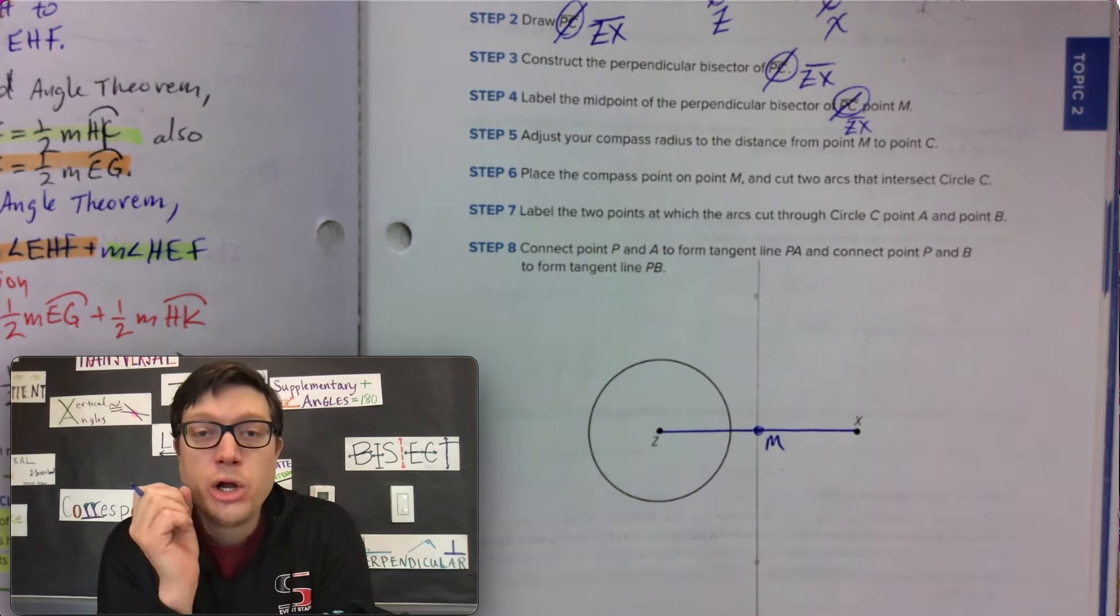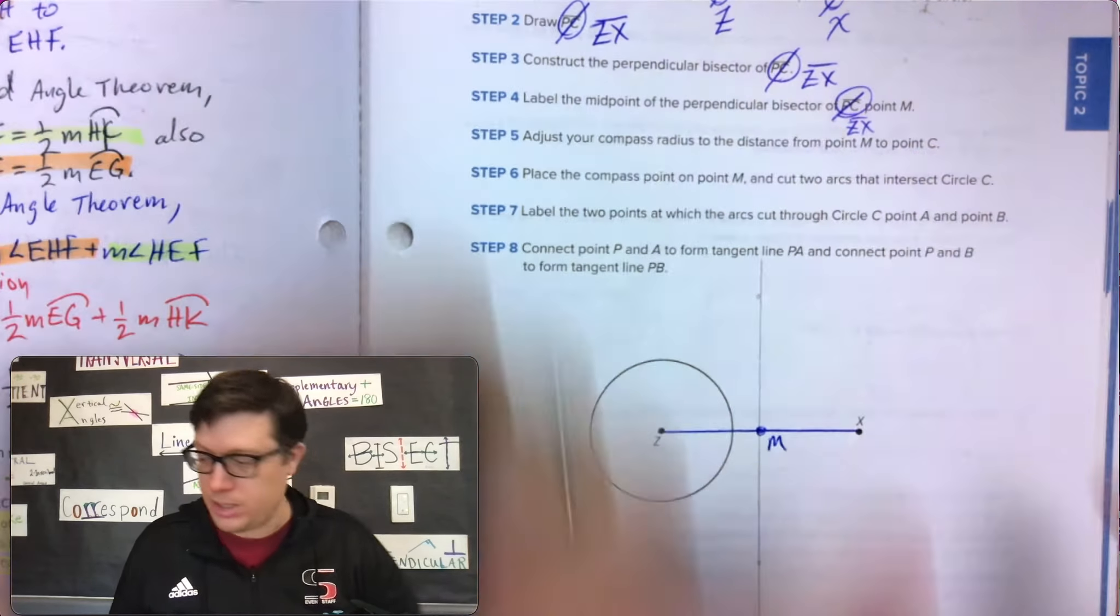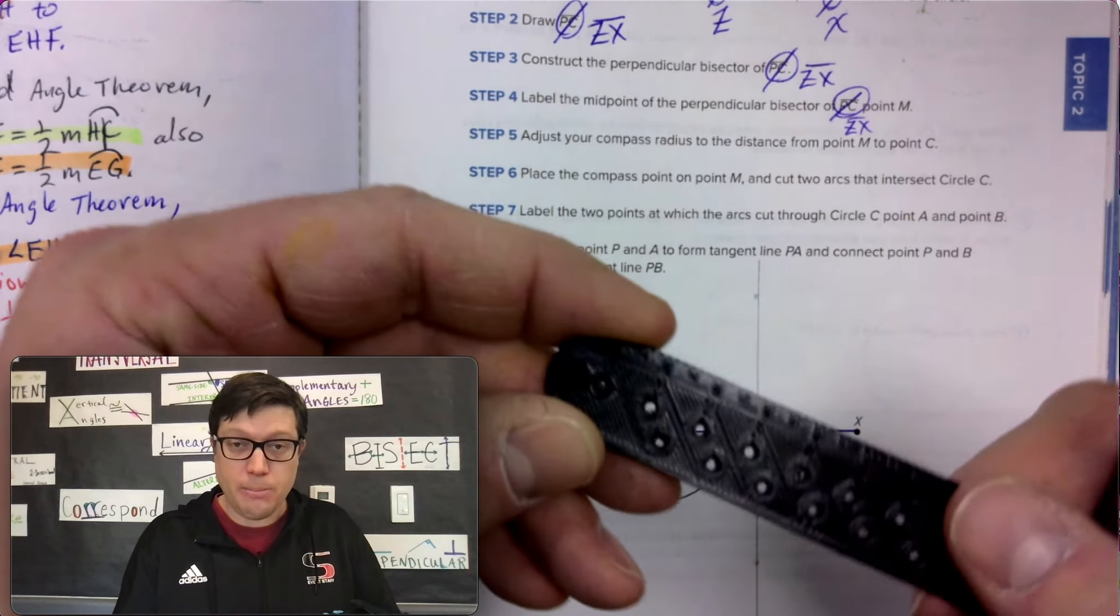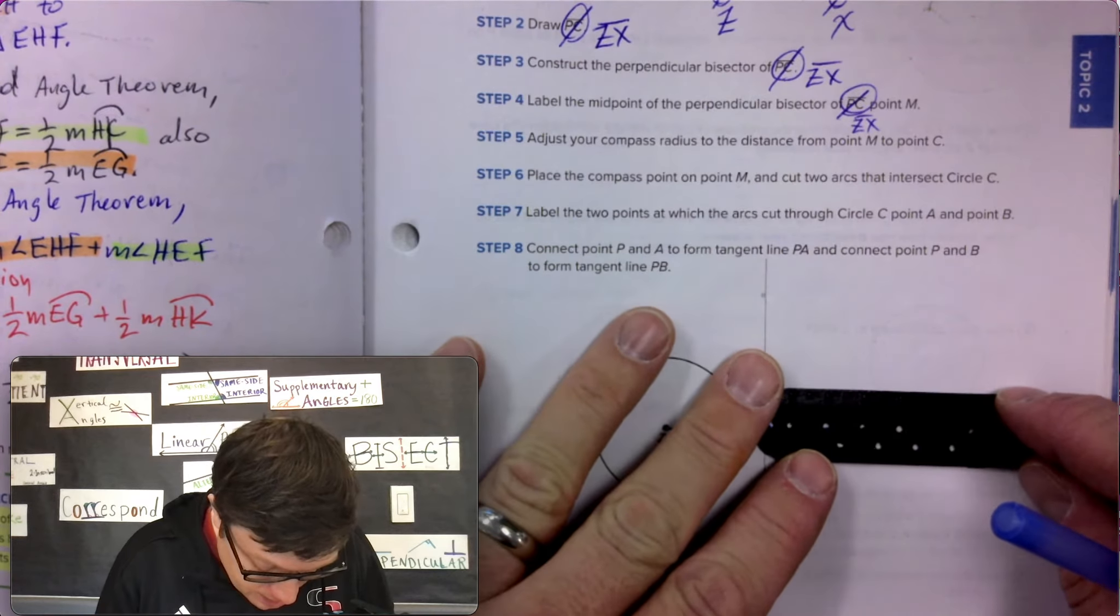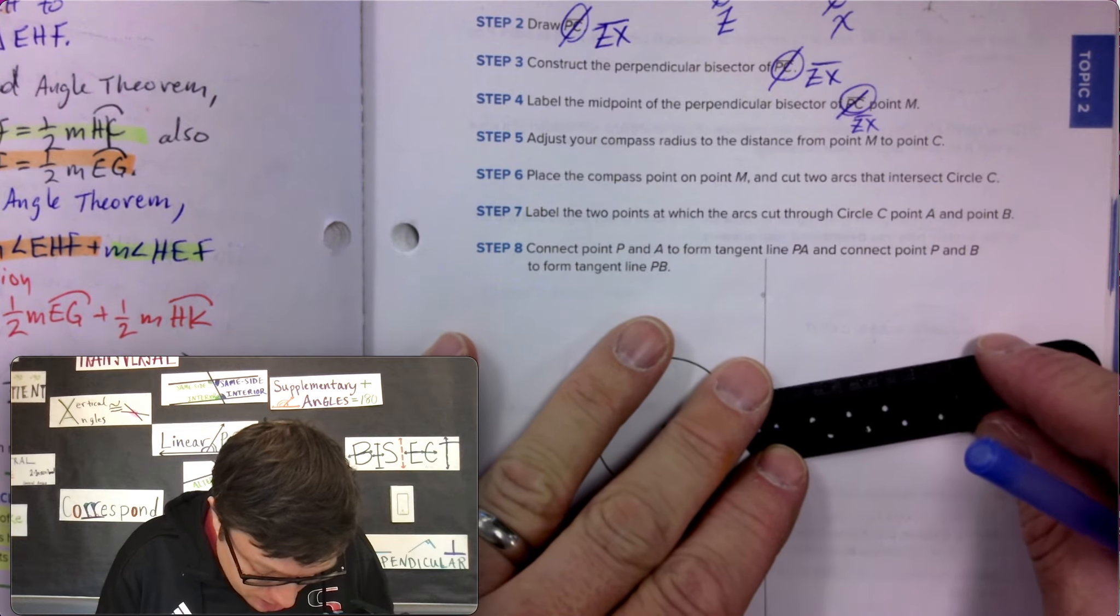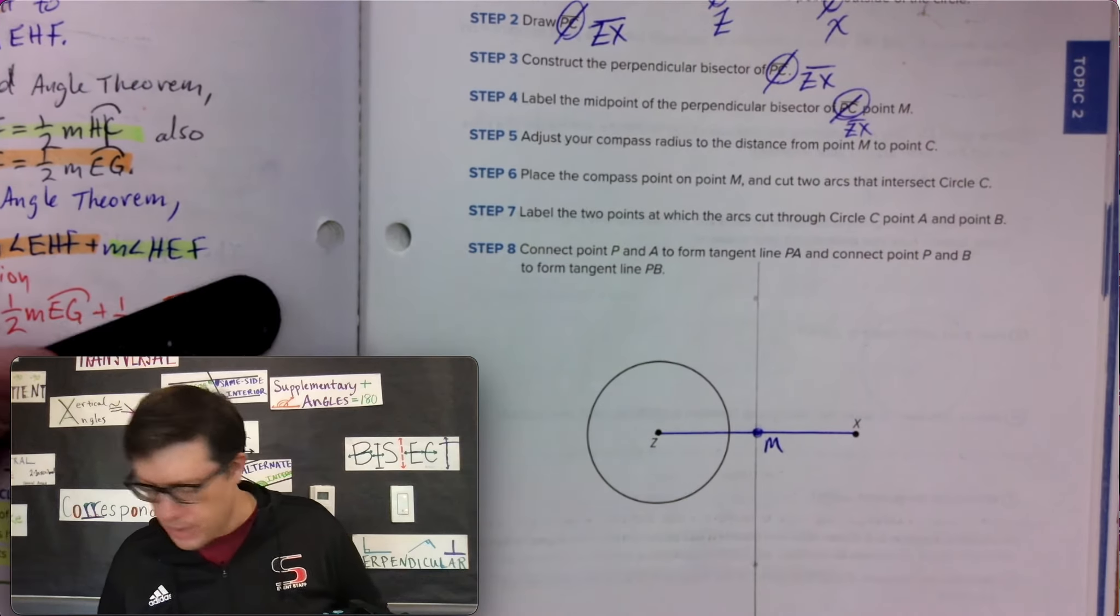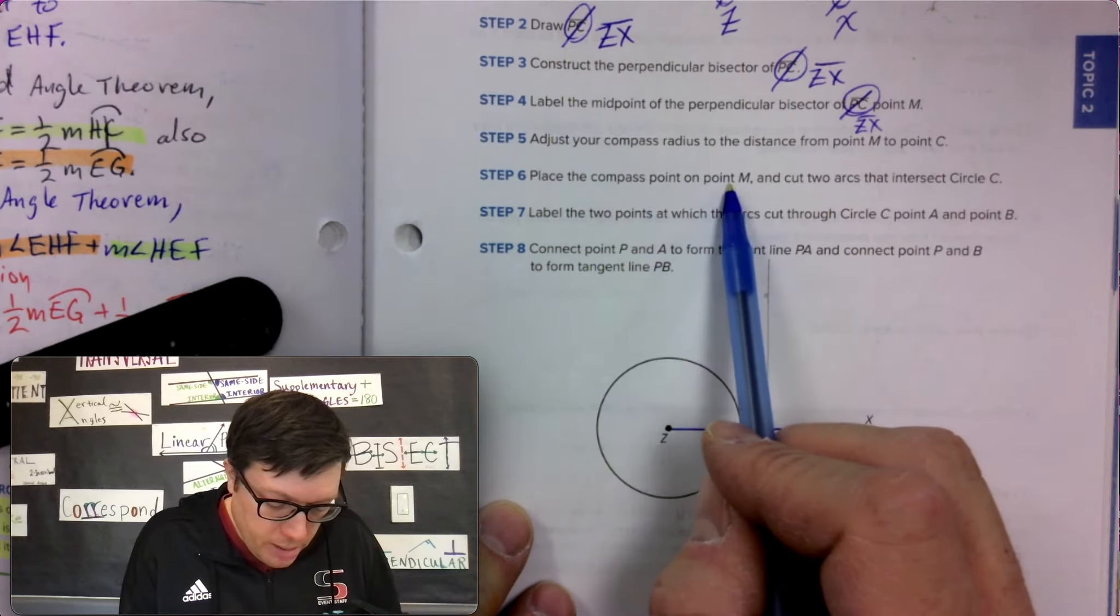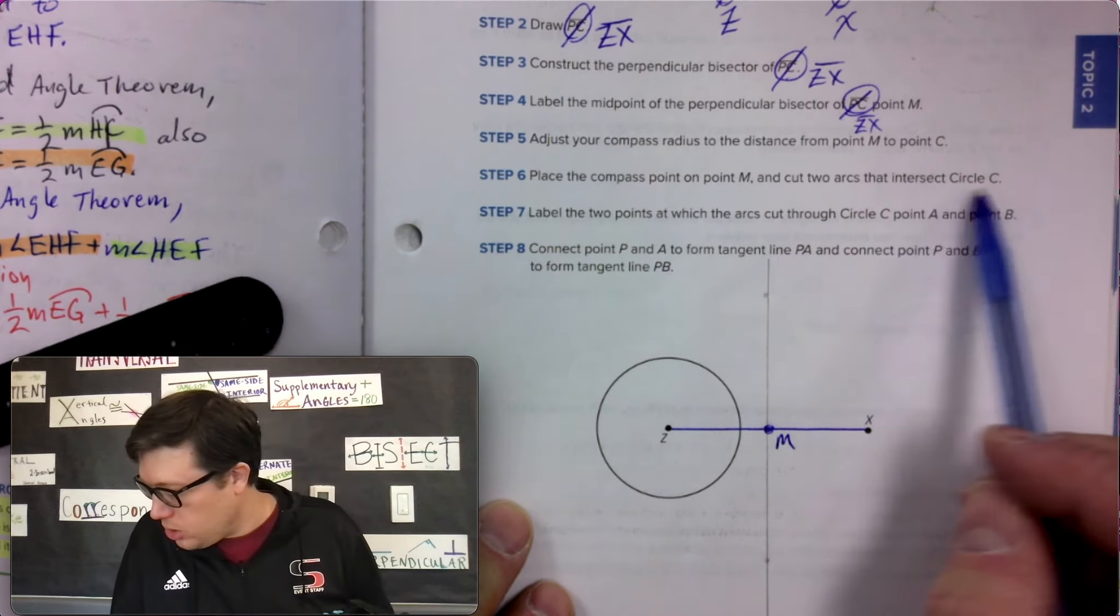Now, adjust your compass radius to the distance from point M to point C. So if I am actually using this compass, this would actually not really work unless I can see, I kind of can. It's not close enough for this to actually function the way it needs to. But let's see what they're telling us to do. To adjust,